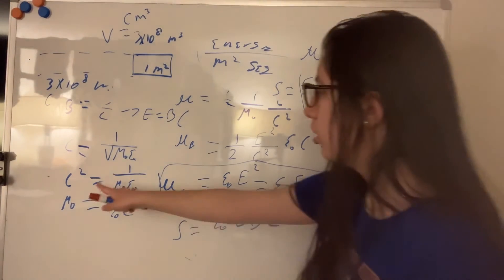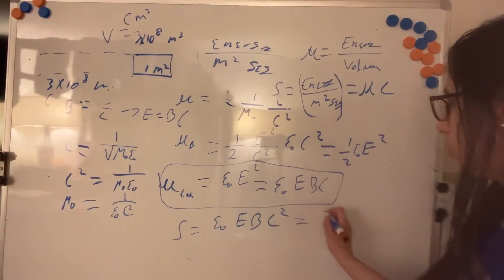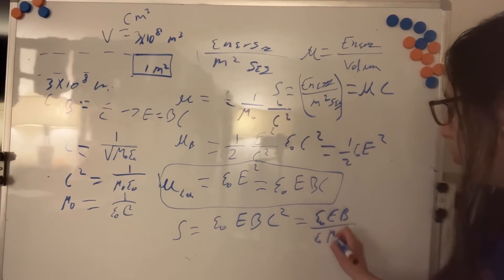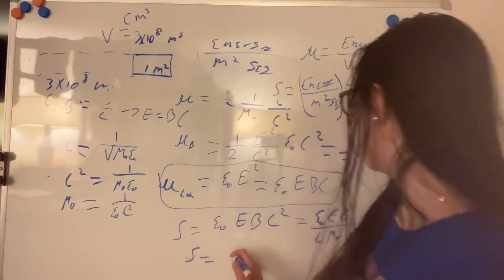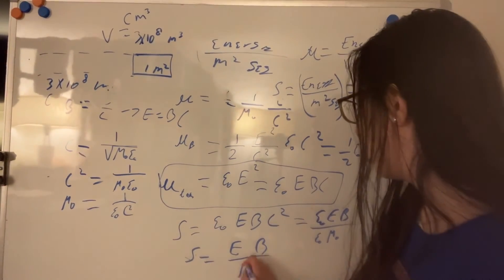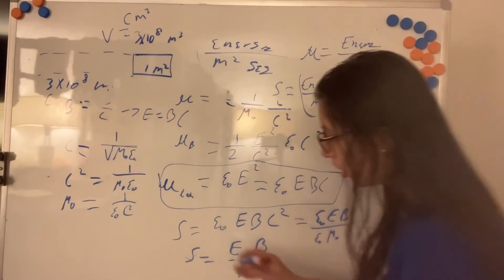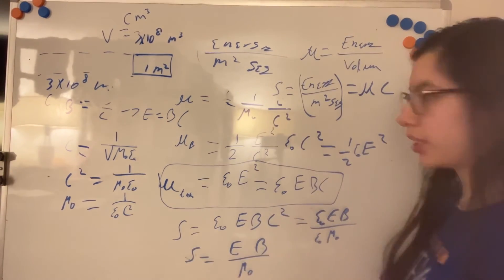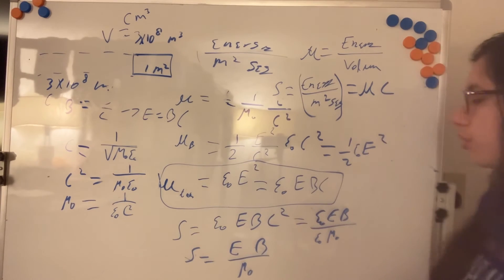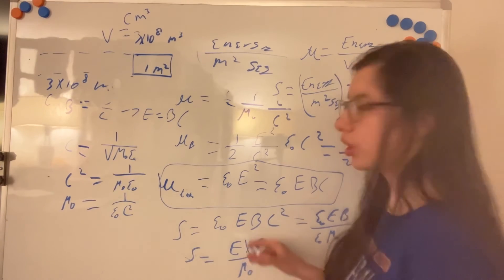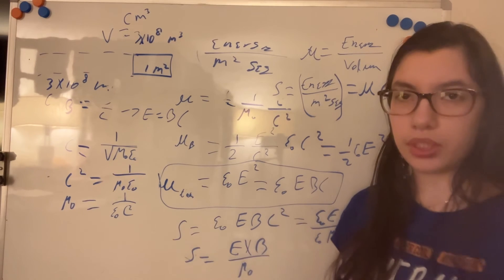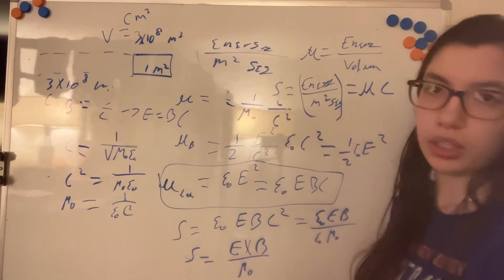So S equals epsilon naught times E times B times C, and then times another C, giving C squared. Since C squared equals one over mu naught epsilon naught, we get S equals epsilon naught times E times B times one over epsilon naught mu naught, which simplifies to S equals E times B divided by mu naught. This is called the Poynting vector and represents the energy flowing through a square meter per second.